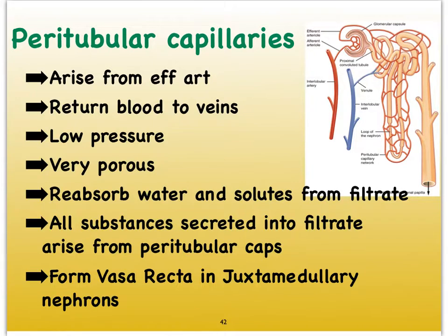We're still not done studying the anatomy of nephrons — there's a special apparatus we still need to take a look at, which forms right where our distal convoluted tubules meet up with the arterioles. That particular apparatus has a big influence on the functioning of the nephrons, so that's what we're going to take a look at next.